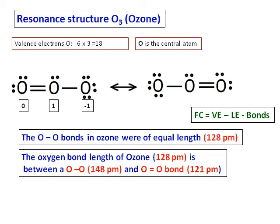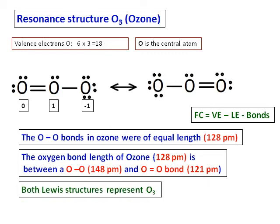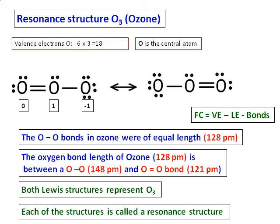Experimentally, we should have found one oxygen being a double bond and the other a single bond. But what we found was the oxygen-oxygen bonds in ozone were of equal length, between the length of a single bond and a double bond.